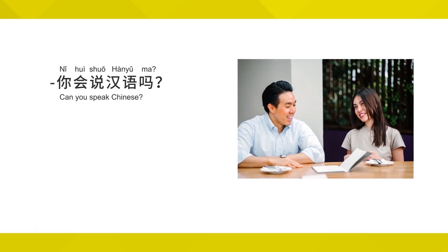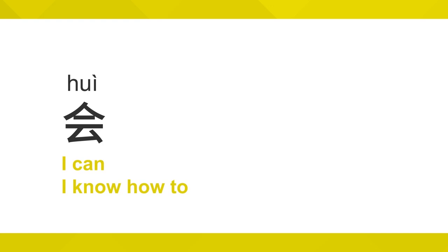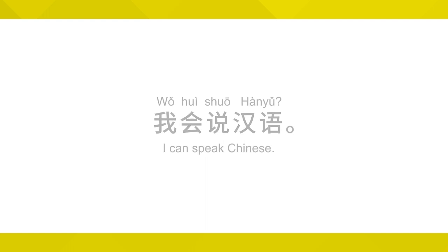你会说汉语吗？ 我会说汉语。 Hannah just asked me if I can speak Chinese. Keep in mind, the auxiliary verb 会 is kind of like in English saying 'I can' or 'I know how to.' Let's listen again. 你会说汉语吗？ 我会说汉语。 I can speak Chinese, or I know how to speak Chinese.